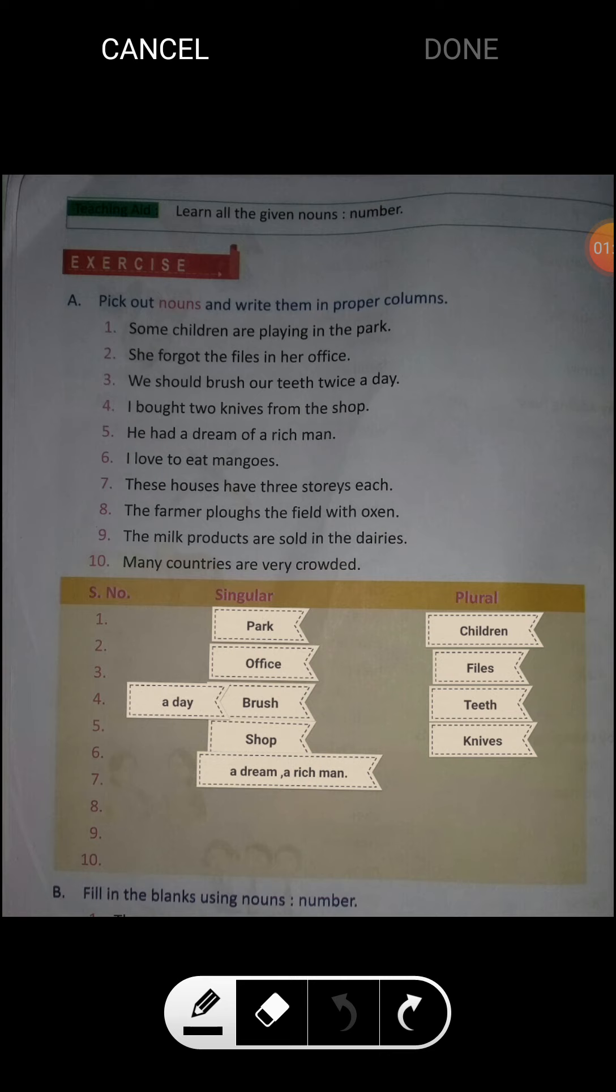And I have already done some for you. I have written some nouns for you. Let's see in what manner you have to do it. Sentence first is 'Some children are playing in the park.' Here the word children is in plural number.